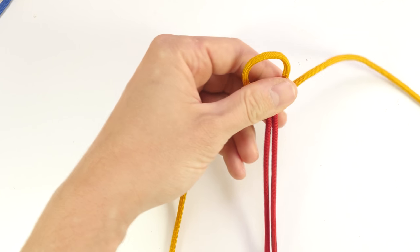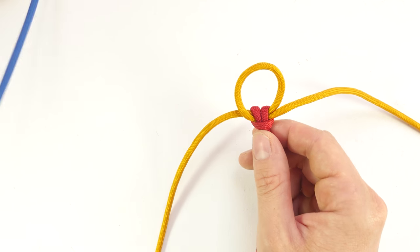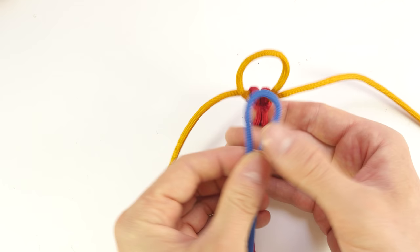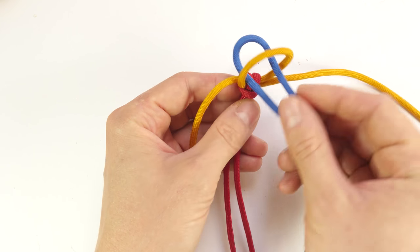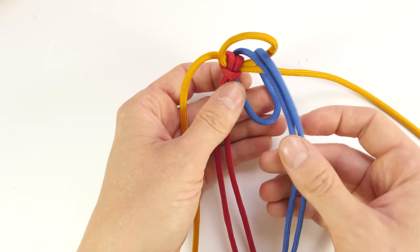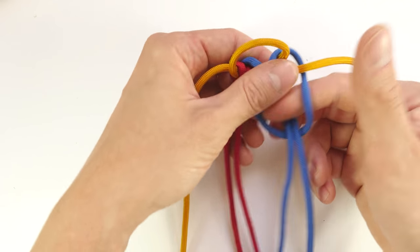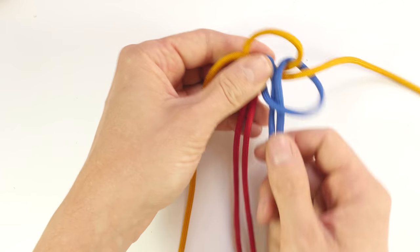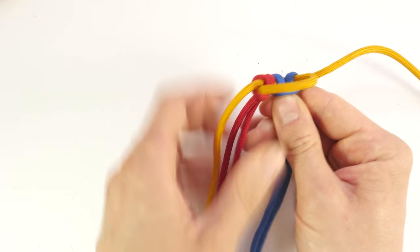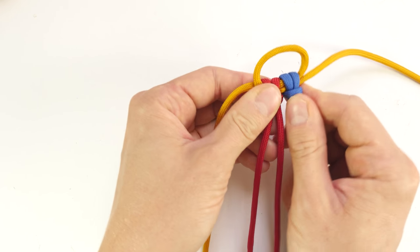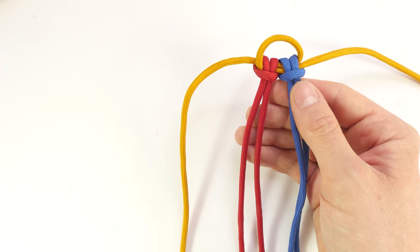Then take your third cord, fold it in half, feed it through the loop, pull the ends through the bite in order to create a second lark's head knot. Then tighten up your second lark's head knot and this is the setup that we can use in order to create a double box knot sinnet.